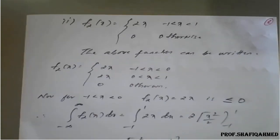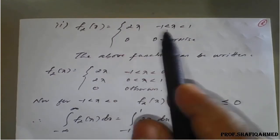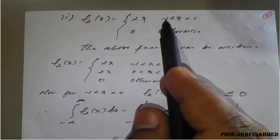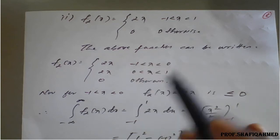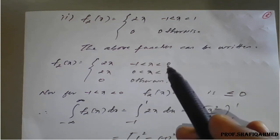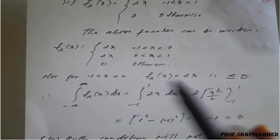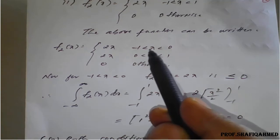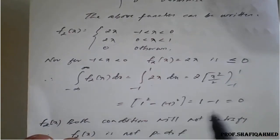Similarly for the second example: I divided the interval into minus 1 to 0 and 0 to 1. In one case the function is negative and in another it is positive. Overall, the function can be negative, and if you integrate from minus 1 to plus 1, the result turns to 0, not 1. In both cases, f2(x) is not a PDF.